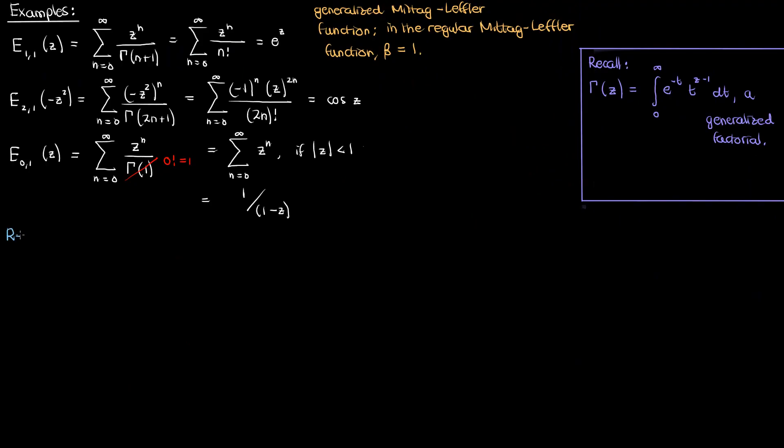Now the Mittag-Leffler function also satisfies a recurrence property, which I'm going to prove here. It's a pretty quick proof. This recurrence relation lets us go from the Mittag-Leffler function of alpha and beta plus alpha to the Mittag-Leffler function of alpha and beta, and I'll call this recurrence relation equation 2. So let's start by looking at this first term on the right hand side of equation 2, and we'll eventually use this first term to prove the recurrence relation.